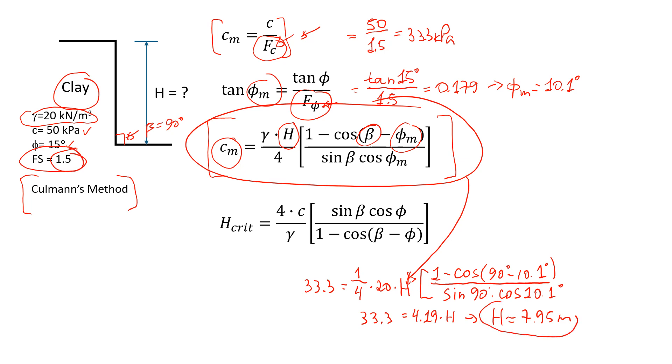Now we can also look at the critical cut. The idea of the critical cut is that the safety factor is going to equal one. We don't need the mobilization functions anymore - we just use the real cohesion and real friction angle.